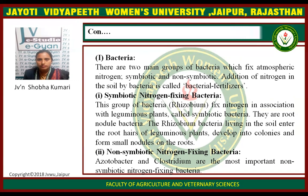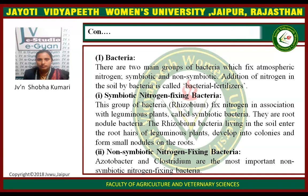Non-symbiotic nitrogen-fixing bacteria. Azotobacter and Clostridium are the most important non-symbiotic nitrogen-fixing bacteria. These bacteria work independently. Azotobacter is an aerobic nitrogen-fixing bacterium and thrives well in neutral soils. It is susceptible to deficiency of phosphate. Azotobacter has been found to fix considerable amounts of nitrogen. Clostridium is an anaerobic bacterium which can adapt even in acidic soil and fix nitrogen.